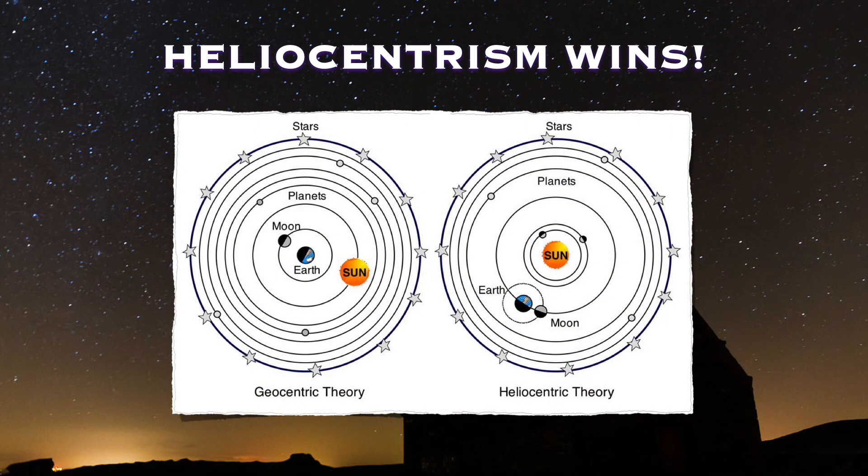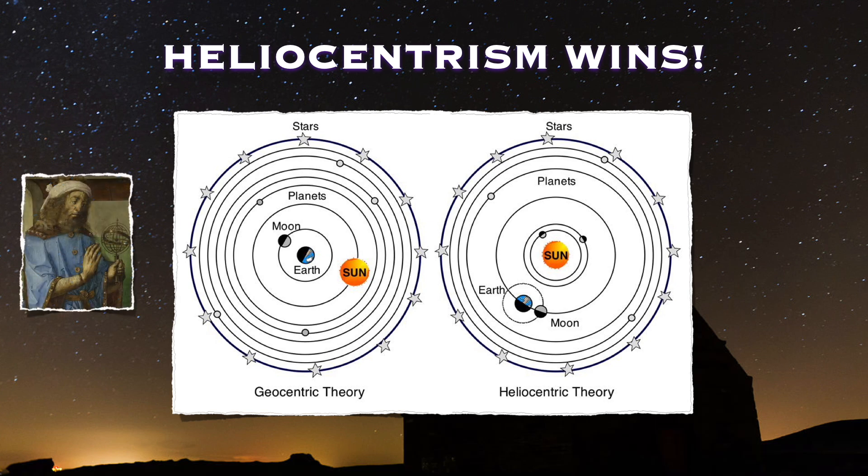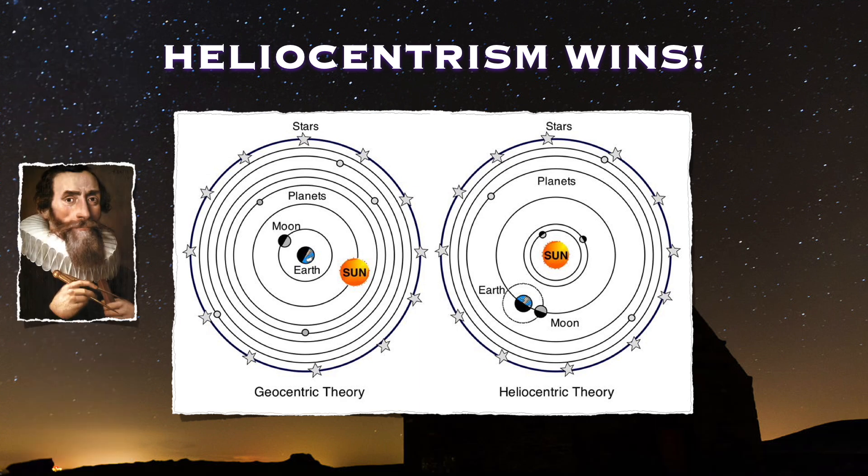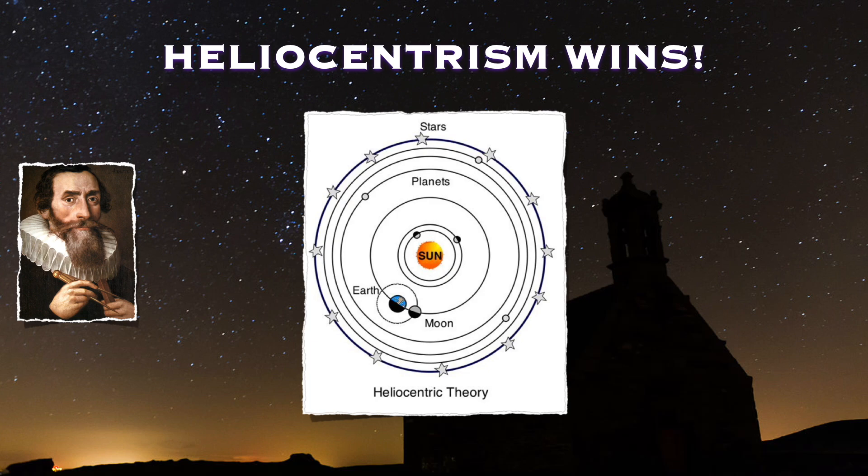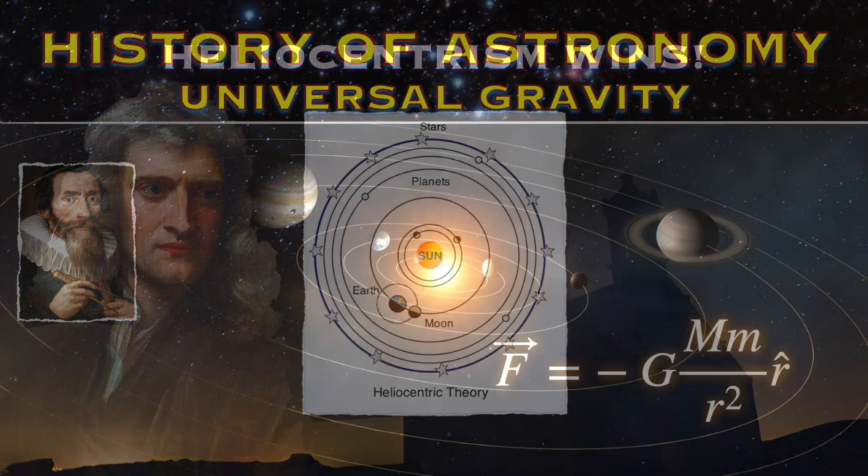These three laws revolutionize astronomy. For centuries, astronomers knew that Ptolemy's model didn't work, but nobody could find a better one. And now, finally, a solution has been found. Kepler proves the geocentric model is wrong. The planets go around the sun. Or do they?